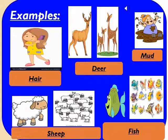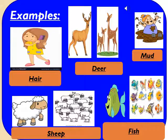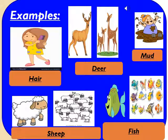Let us see some examples following rule number 6. Hair — whether you speak about a single hair strand or many hairs, whether in singular or plural form, you will pronounce it 'hair' only. Same way with deer — whether it is one deer or many deer, both in singular and plural form it remains 'deer' only.